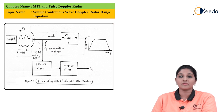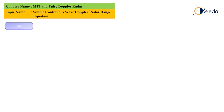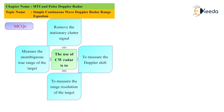Now let's move to the MCQ part. The first question: what is the use of continuous wave radar? Option A: to measure the Doppler shift. Option B: to measure the range resolution of the target. Option C: to measure the unambiguous true range of the target. Option D: to remove stationary clutter signal. The answer is that continuous wave radar is basically used to measure the range resolution of the target.